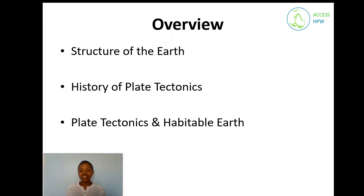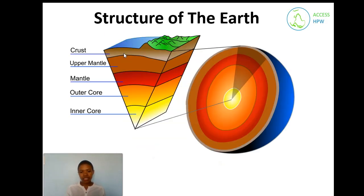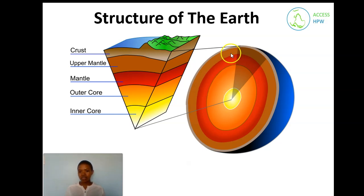We are going to look at the earth from the outside and on the inside — which has the core, the mantle, and the crust. The core has an inner core and an outer core, then the mantle and the upper mantle. The crust is divided into oceanic crust and continental crust.